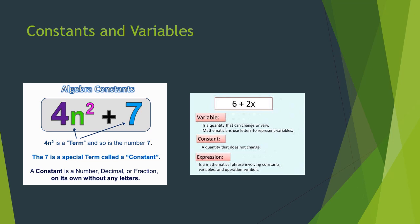Literals and constants: a symbol used to represent an unspecified number is called a literal or variable. The small letters a, b, c, x, y, z, etc. of the English alphabet are generally used to indicate a variable. Numbers like 2, minus 3 and 0 are called constants because they have a fixed or constant value. A variable is a quantity that can change or vary; in mathematics we use letters to represent variables. A constant is a quantity that does not change. An expression is a mathematical phrase involving constants, variables and operation symbols.